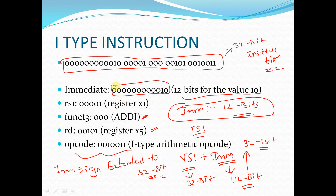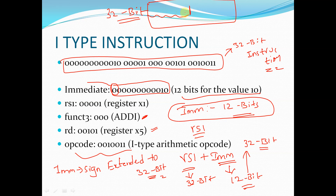Sign extension works as follows: we look at the MSB of the 12-bit immediate value. If it is 0, we fill all the remaining bits with 0 to make it a 32-bit value. If the MSB is 1, we fill all the remaining bits before it with 1 until it becomes a 32-bit value. After performing sign extension we are going to perform the operation.